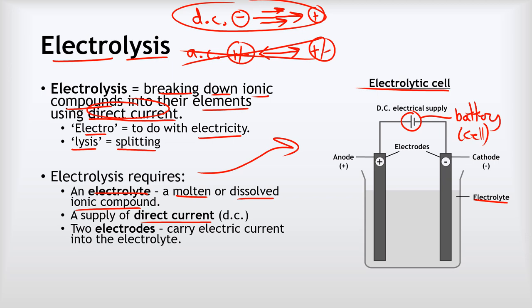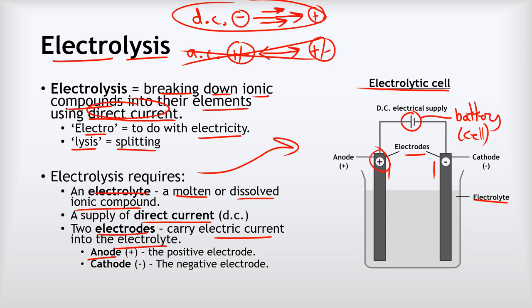The last thing we need are two electrodes. The electrodes are normally made out of carbon or metal — something that can conduct electricity — and they carry the electric current into the electrolyte. These big black sticks represent our electrodes. There are two electrodes: the positive one is called the anode, and the negative one is called the cathode.